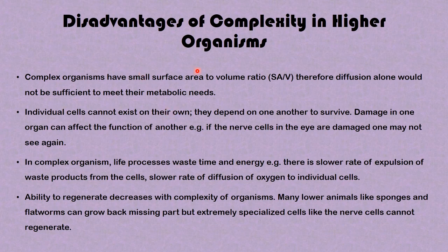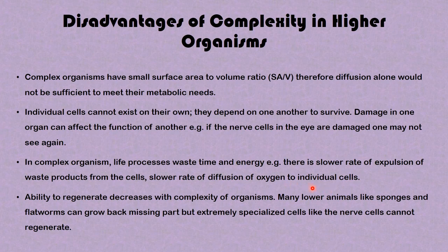Now let's look at the disadvantages of complexity in higher organisms. Complex organisms have a small surface area to volume ratio; therefore, diffusion alone is not sufficient to meet their metabolic needs — other processes are required. Individual cells cannot exist on their own; they depend on one another to survive. Damage in one organ can affect the function of another — for example, if the nerve cells in the eye are damaged, one may not see again. Life processes waste time and energy, with a slower rate of expulsion of waste products and slower diffusion of oxygen to individual cells. Finally, the ability to regenerate decreases with complex organisms — many lower animals like sponges and flatworms can grow back missing parts, but highly specialized cells like nerve cells cannot regenerate.